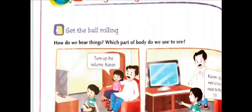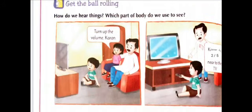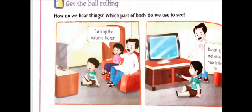Now look at the pictures. Two pictures are given. In the first picture, a girl tells a boy to turn up the volume. In another picture, the father tells a boy not to sit too near to the TV. These pictures describe that we see with our eyes and hear with our ears. We should not hear anything at high volume like music or movies, as that can damage our ears. Also, we should not watch TV too closely, as that can affect our eyes.